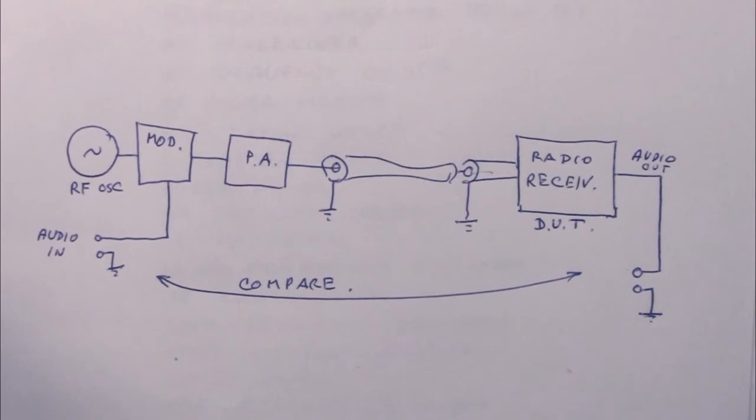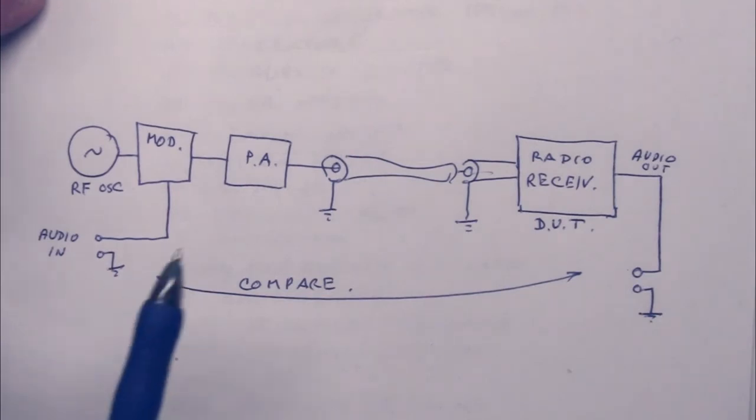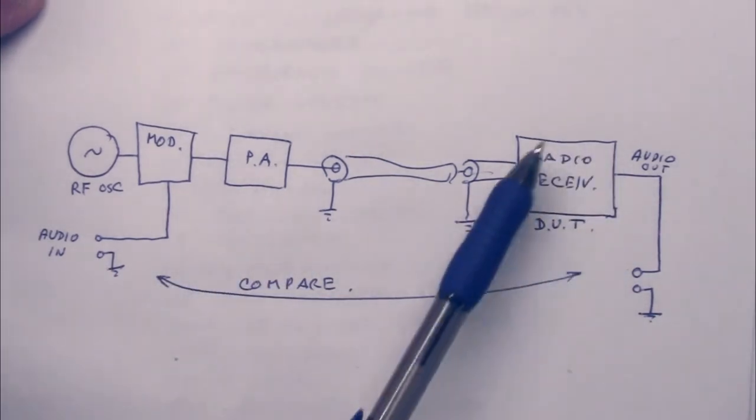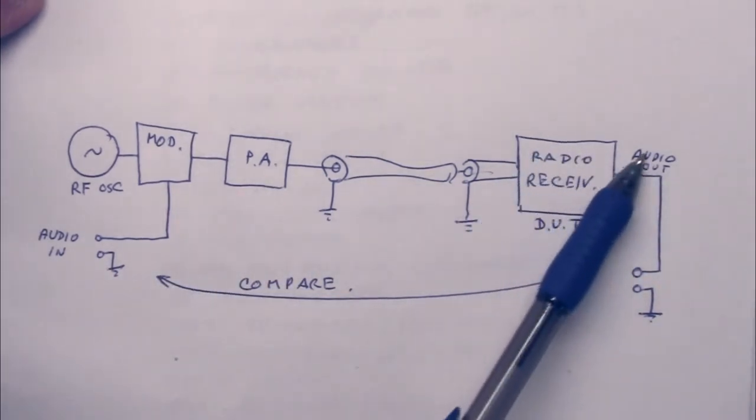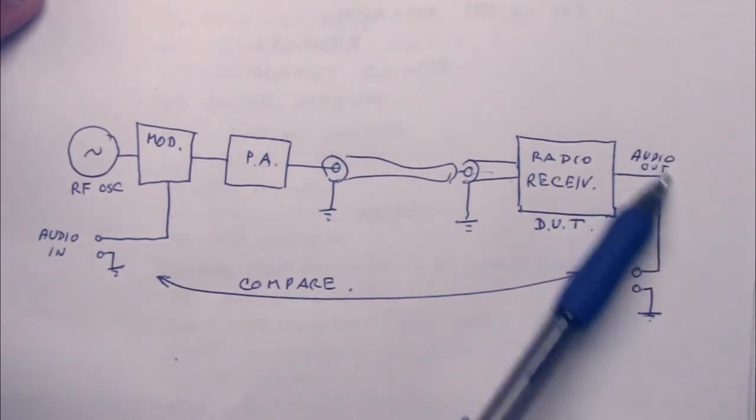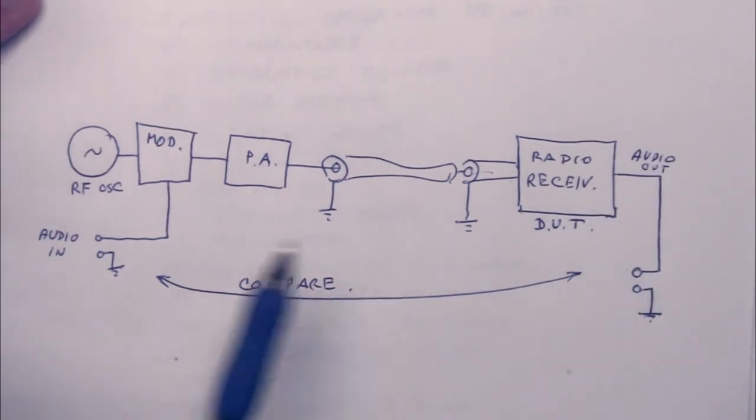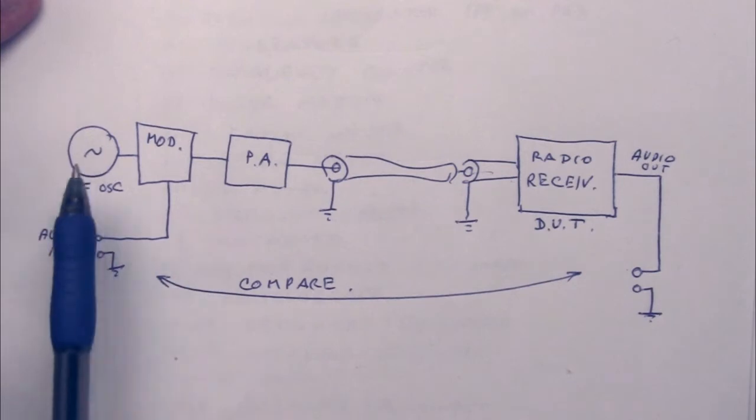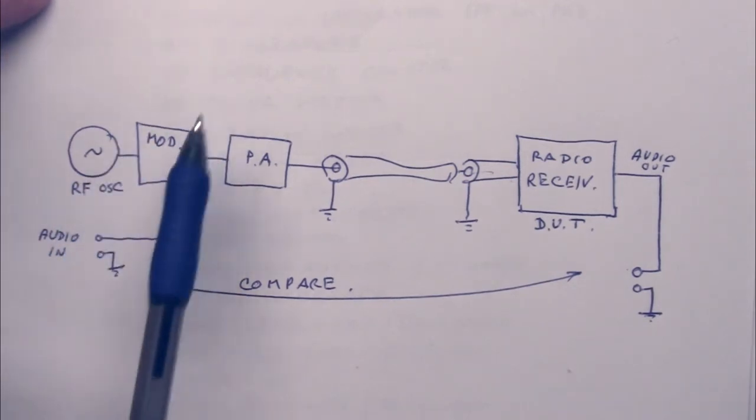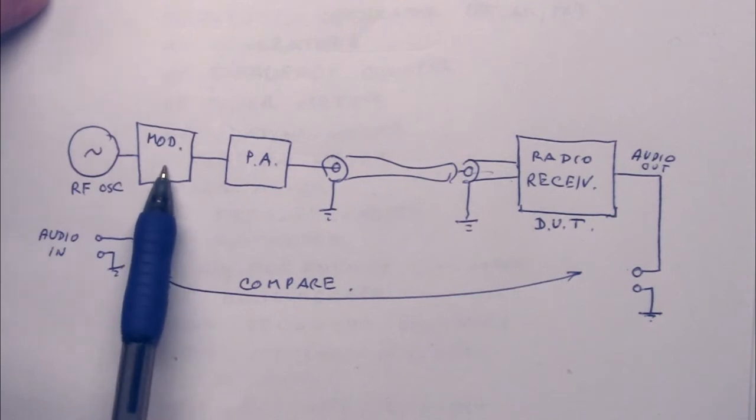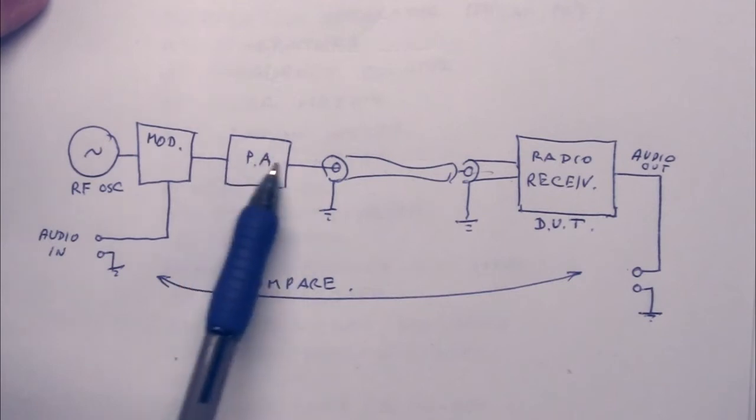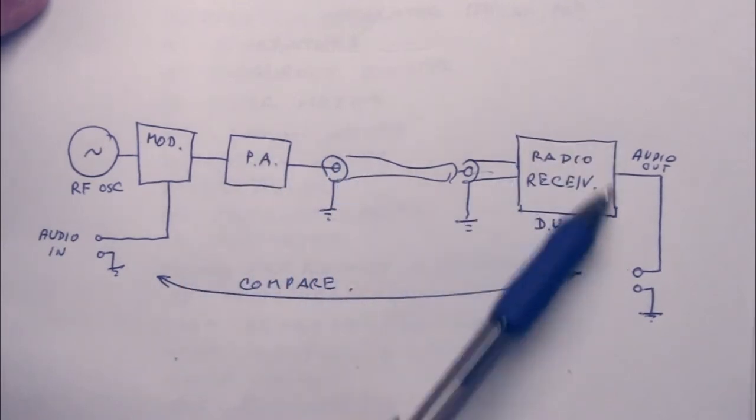Likewise, when you want to test receivers, you do basically the same but the other way around. Here's my device under test, the radio receiver, and we have the output from the receiver, of course, which is audio. Then to test it, you have over here an RF oscillator which is very clean. You have a modulator, it could be FM, AM, PM, quadrature modulation, whatever, and the power amplifier, and then you send it to your receiver here.